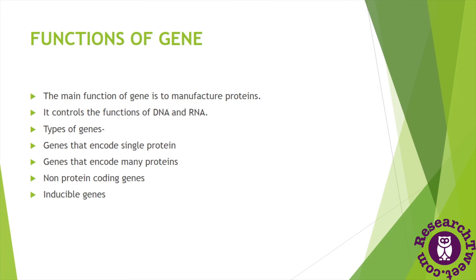Genes are classified into different types. There are various types such as structural genes, regulatory genes, repressible genes, transposons, and many others. According to their function, genes are classified into those that code for a single protein — like the gene coding for hemoglobin in eukaryotes — and those that code for many proteins. There are also non-protein coding genes, which act as regulatory genes functioning as promoters. Another type is inducible genes, which are non-constitutive genes switched on and activated in response to the presence of a chemical inducer.